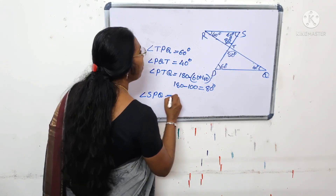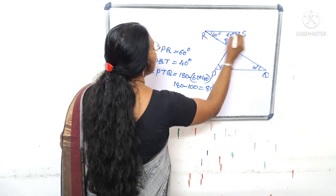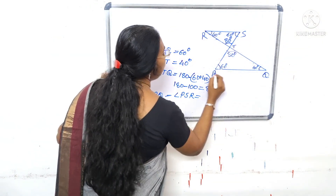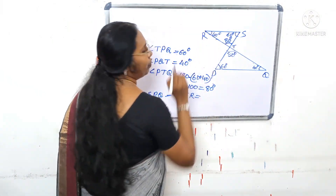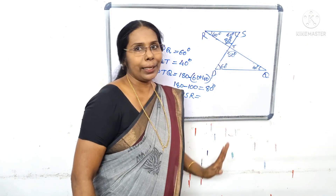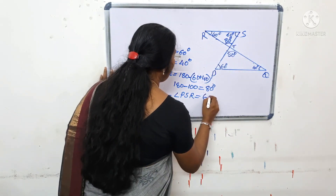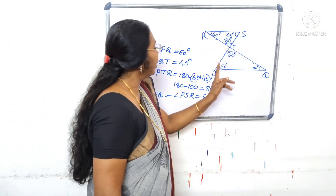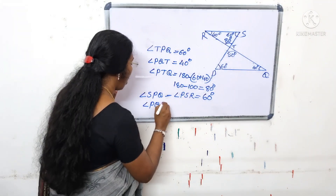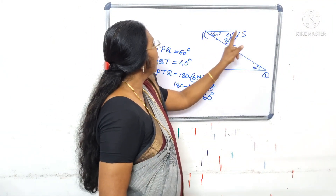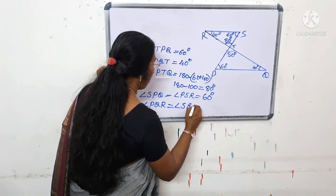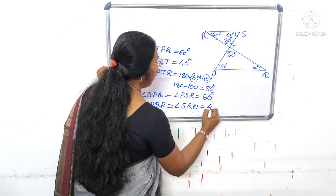SPQ is equal to PSR. This is SPQ and PSR. This is SPQ — 60 degrees. This is PQR. We call it corresponding — PQR is 40 degrees.